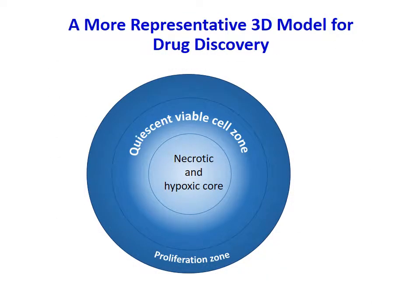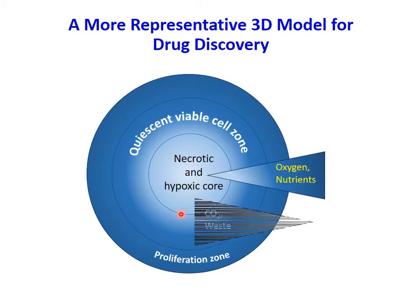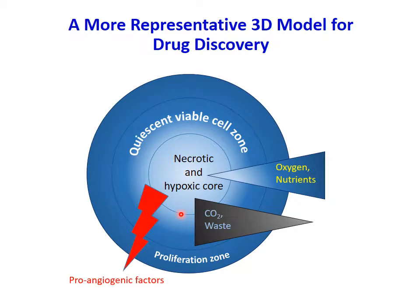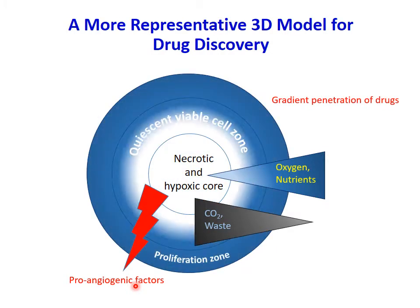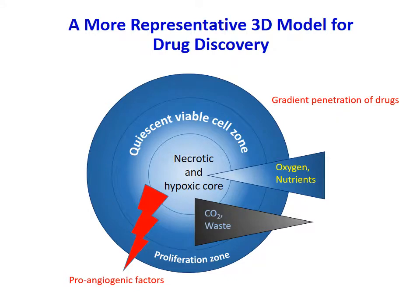The 3D spheroid is a more representative model for drug screening. A necrotic and hypoxic core is established within the model due to limited oxygen and nutrient penetration. This encourages vascular network establishment as pro-angiogenic factors are secreted by tumor cells. Furthermore, in a 3D environment, a gradient penetration of drugs is achieved, therefore allowing us to utilize the model as a screening platform.